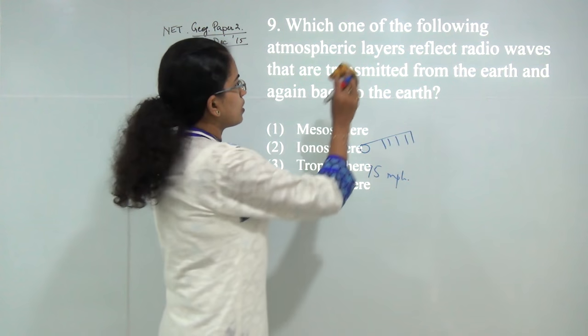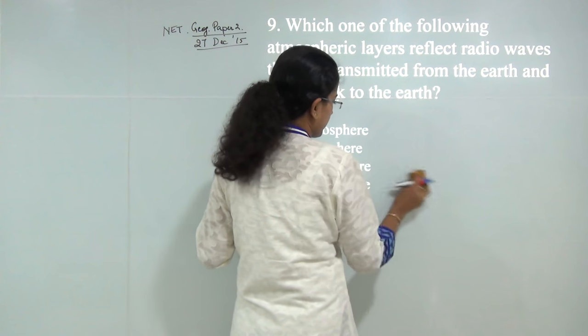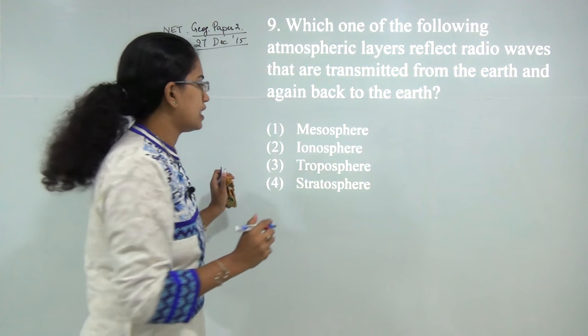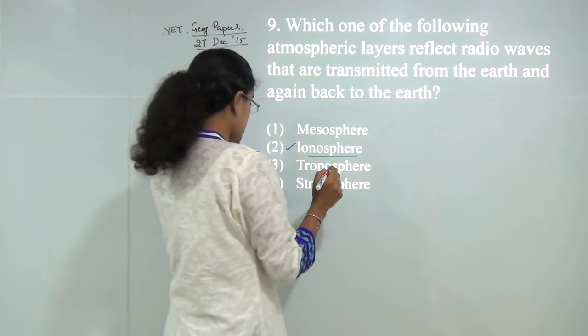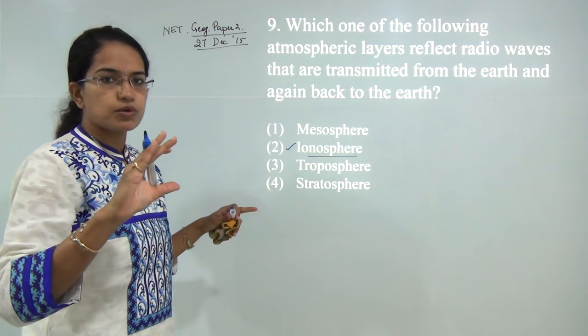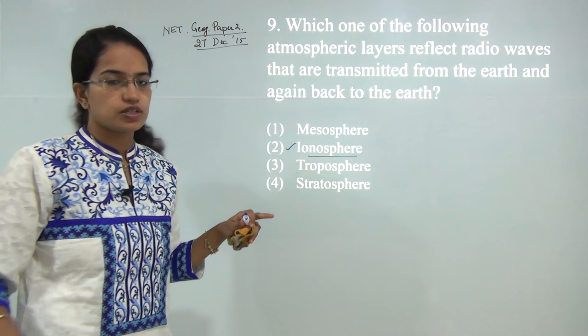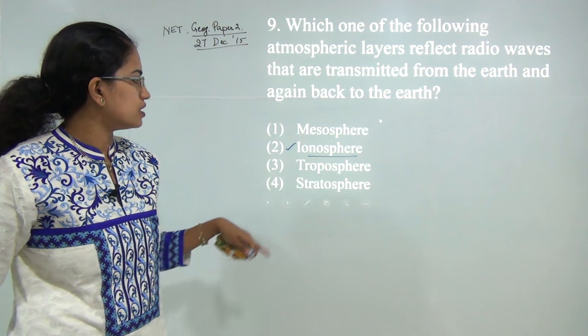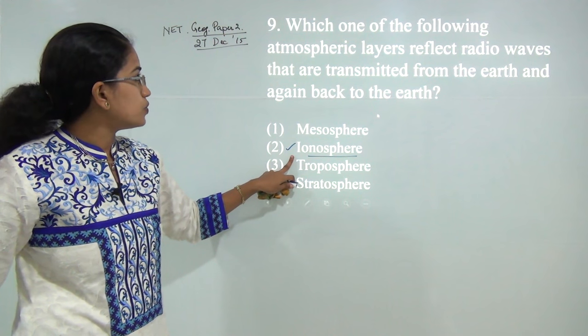Next: reflection of radio waves. We will cover this when we discuss layers of atmosphere. The correct answer is ionosphere. You need to know the major layers of the atmosphere and their functions. Ionosphere reflects the radio waves transmitted from the earth. The answer is 2.